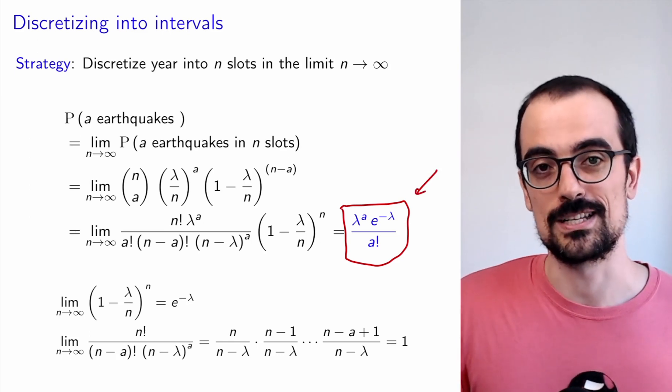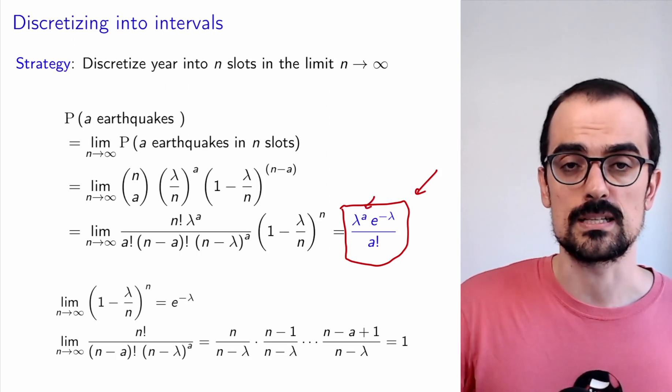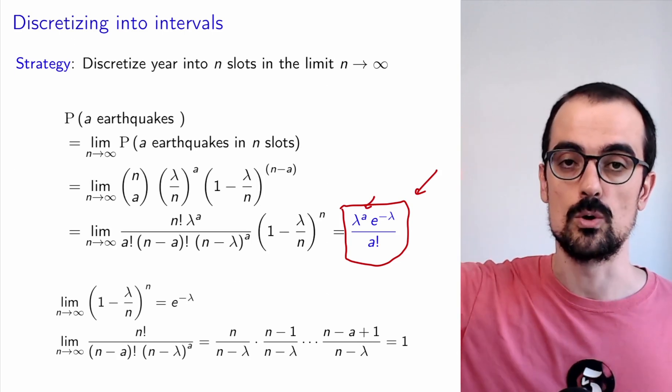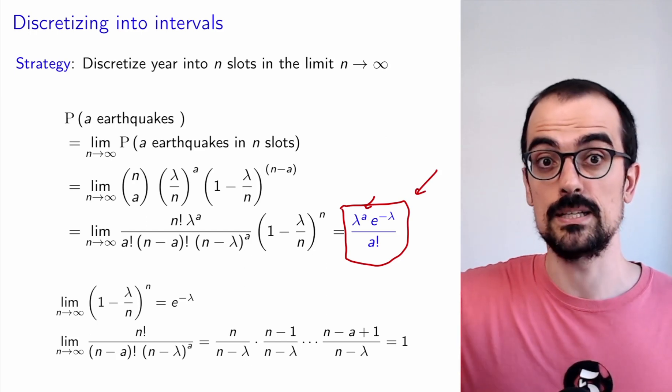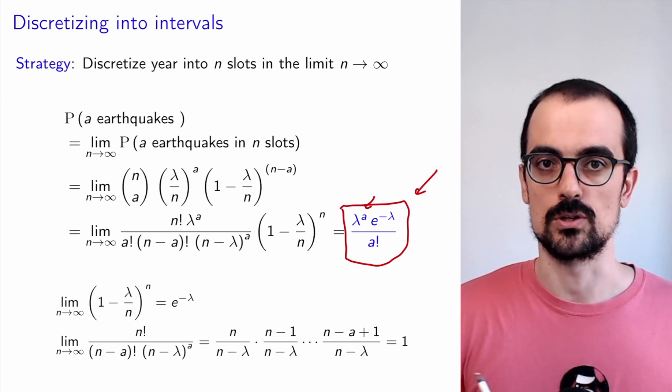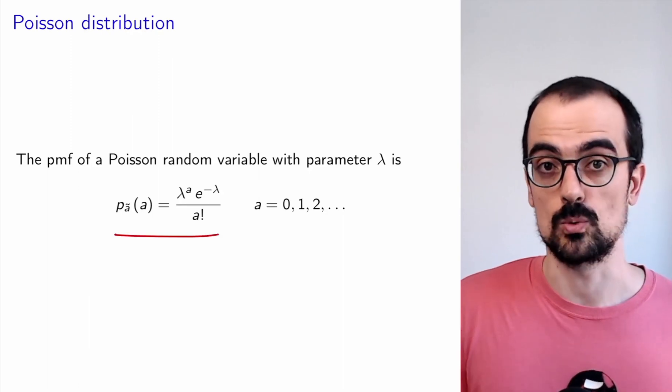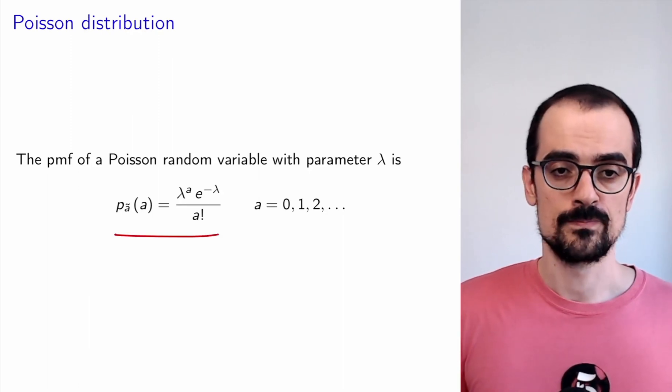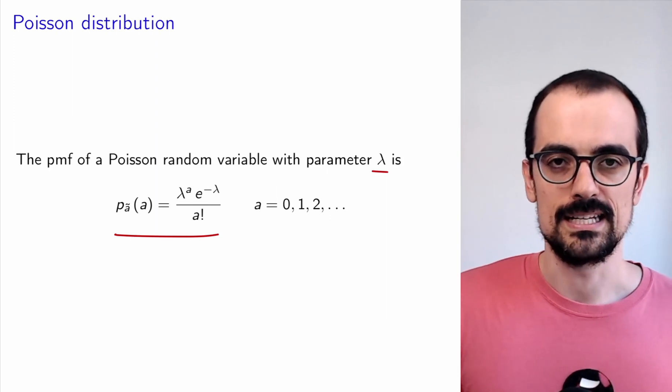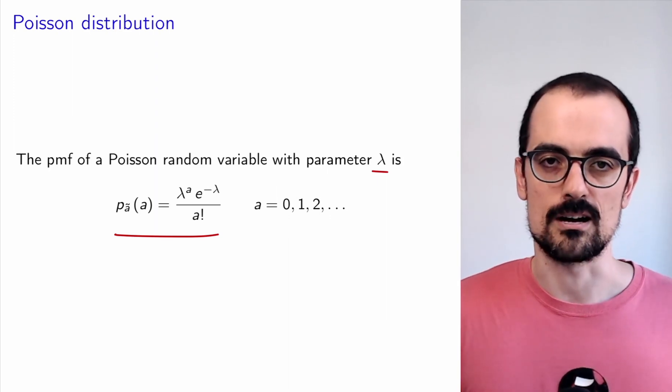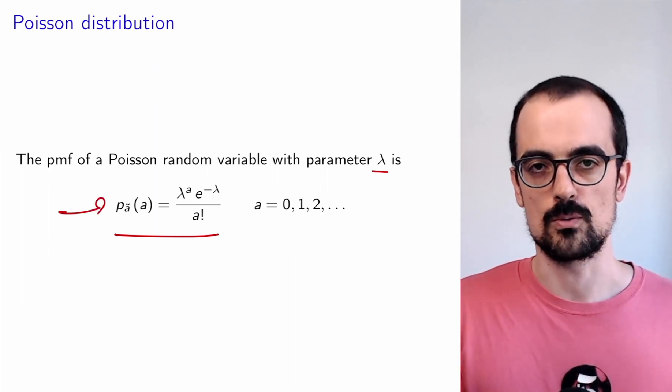And that is actually the PMF of the Poisson evaluated at A. Realize that the number of earthquakes can go from 0 to infinity, but they're countable. It's 0, 1, 2, 3, up to infinity. This gives us the probability of observing A earthquakes for all of those values of A. Because that covers all the possibilities, this PMF is indeed going to add up to 1. I encourage you to check that on your own. So the PMF of a Poisson random variable is a PMF that has this parameter lambda, which again, intuitively is kind of the rate at which these earthquakes are arriving. And it has this PMF, which tells us the probability of seeing a certain number of earthquakes within a year.